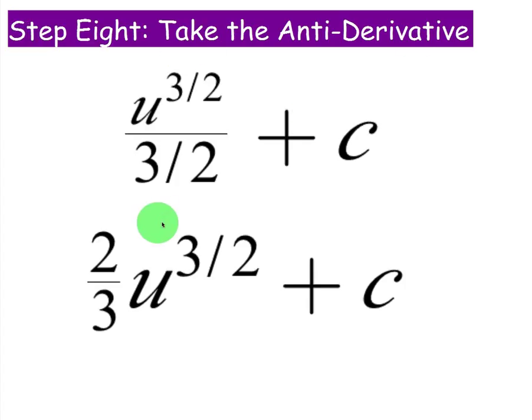So for step 8, when we take the antiderivative, u to the 1 half becomes u to the 3 halves divided by 3 halves, which is 2 thirds u to the 3 halves plus c.